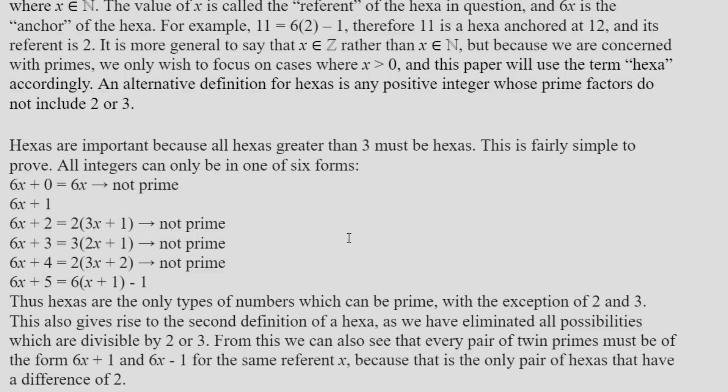But it also follows from that, that a pair of twin primes has to share a referent and an anchor. So you'll never have a pair of twin primes which have different anchors and referents. Now this is useful because it means that we can detect twin primes just by looking at the anchors and referents.